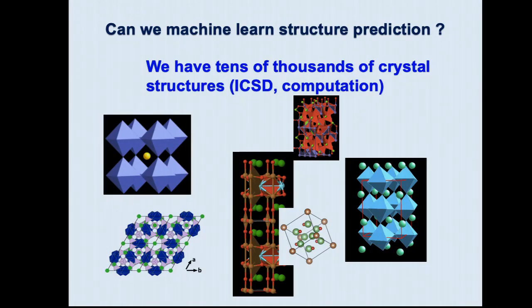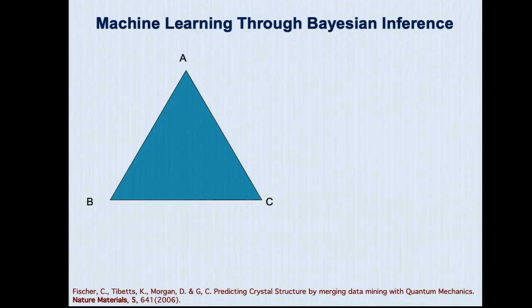So we thought — this is more than 10 years ago — can we machine learn structure prediction? Because this is one problem where you have data in materials science. There are amazing databases compiled, in particular the inorganic crystal structure database, where on the order of 50,000 to 100,000 relations between input and output have been established. Chemistry is the input, crystal structure is the output. Can a machine learn the rules the way Linus Pauling and Hume-Rothery did?